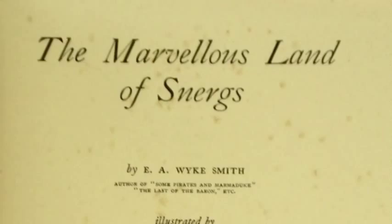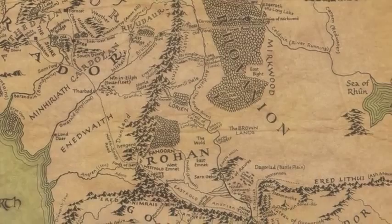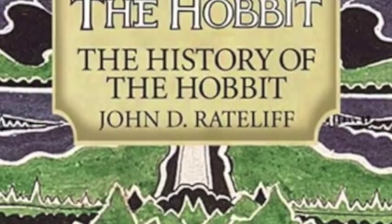We then look at the other stories that Tolkien was writing at about the time that he wrote The Hobbit, in order to understand a bit better where the world of Middle-earth stood in Tolkien's imagination at that time. We will then turn to a close examination of the manuscript development of The Hobbit, using John D. Ratliff's History of the Hobbit and Doug Anderson's Annotated Hobbit.